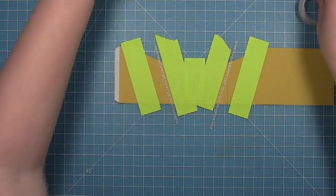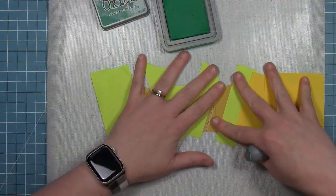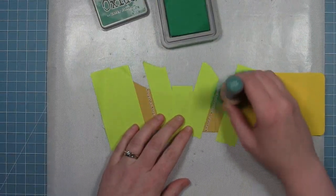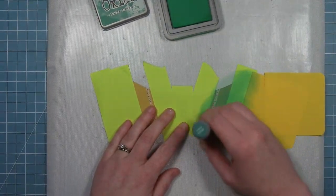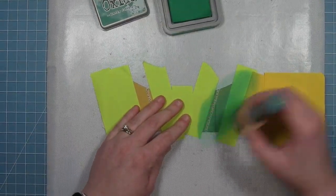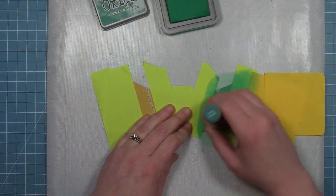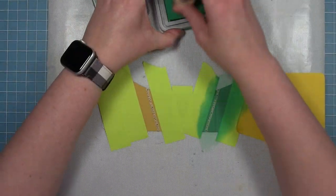But you could do the same thing with the thin stripe. I just kind of eyeballed that one. But you can use your tape as a guide for your widths. So I've got some Lucky Clover Distress Oxide.